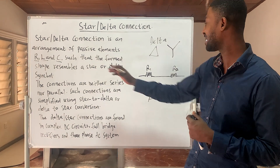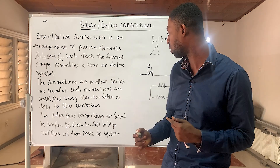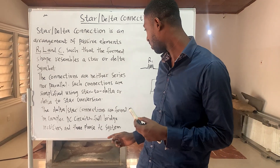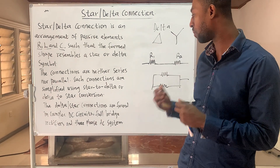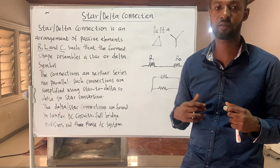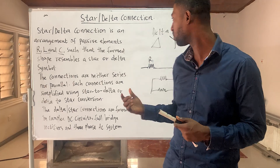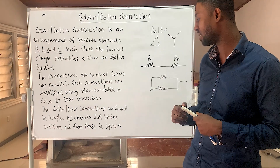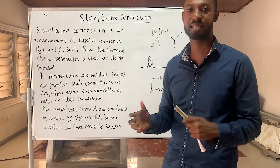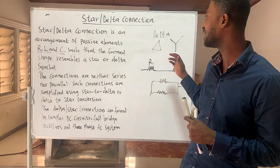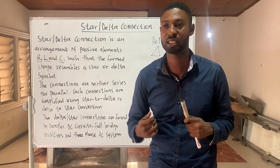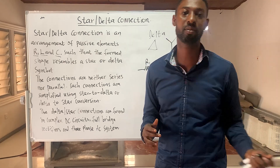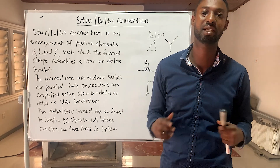When we talk about delta-star connections, the resistors or passive elements are neither connected in series nor parallel. These connections are found in complex DC circuits, full bridge rectifiers, and three-phase AC systems. We'll take them one after the other: star connection, then delta connection, then transforming delta to star and star to delta.